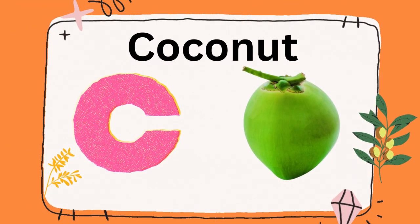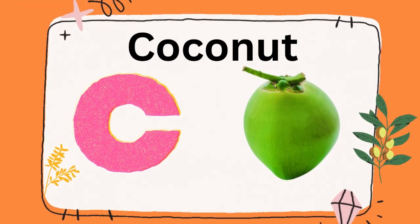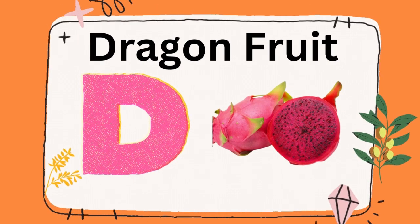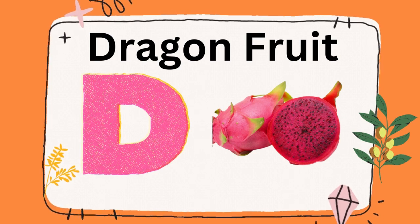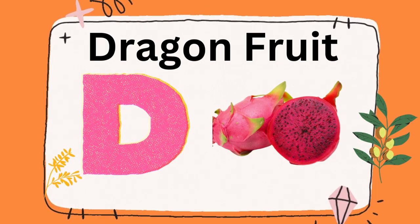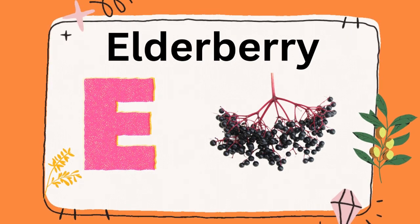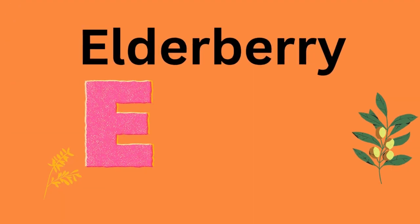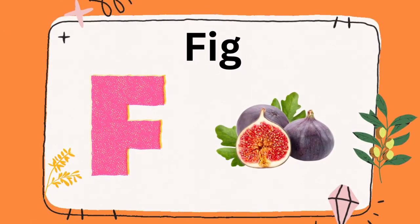C is for coconut, C is for coconut. D is for dragon fruit, D is for dragon fruit. E is for elderberry, F is for fig.